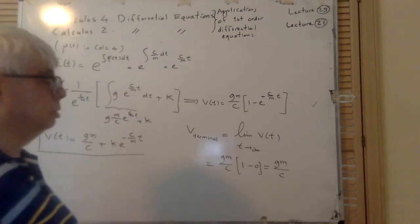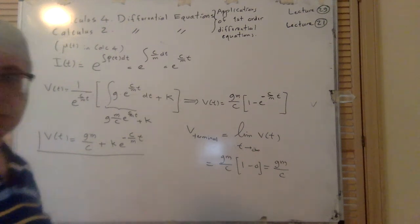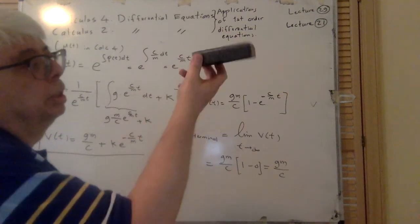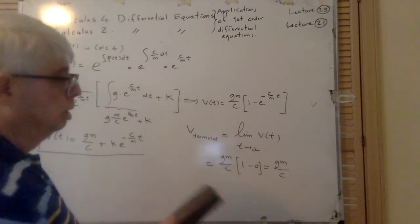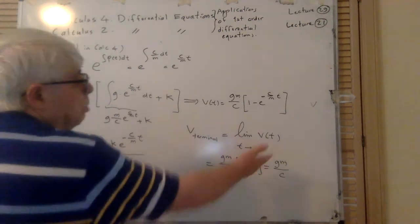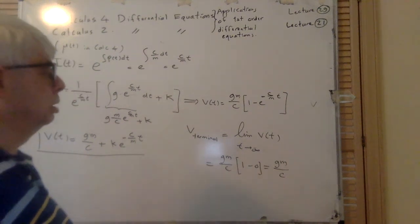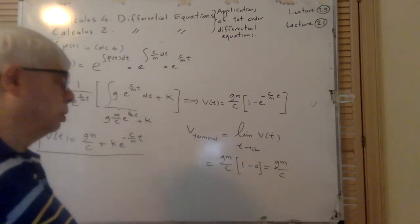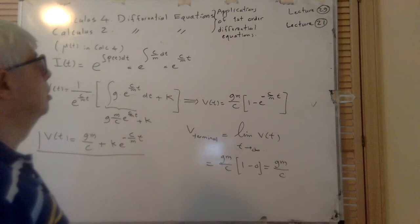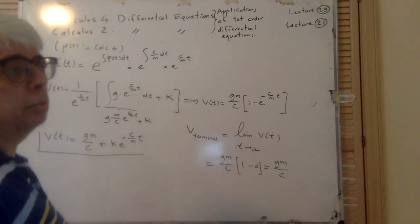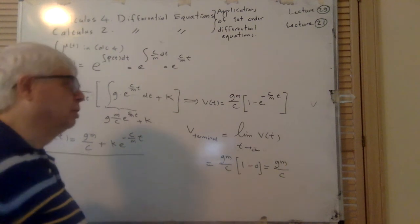Terminal velocity v_terminal = gm/c. A larger surface area (like a parachute) increases c, decreasing terminal velocity — which is the whole point. A smaller mass m also gives a smaller terminal velocity. This explains why a small object like an ant, when dropped, survives — its terminal velocity is very low.